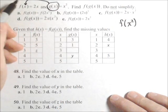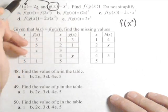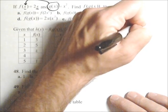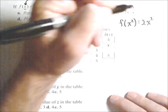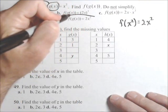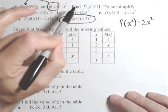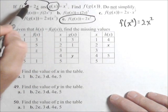Now f of x is 2x, so that means I'm replacing every x with an x squared. So I have 2 times x squared, and there's my composition. Really pay attention to what's going in as the input.